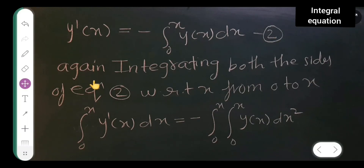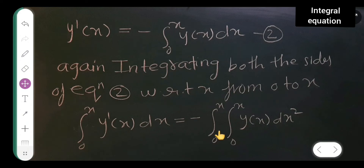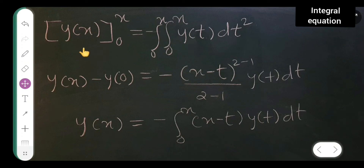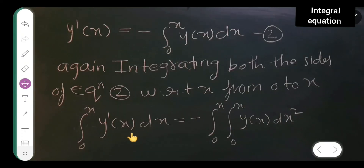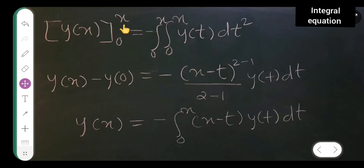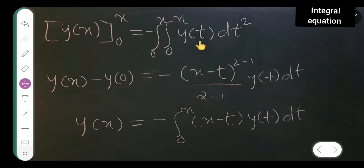Now integrate both sides of equation 2 again from 0 to x with respect to x. The left side gives the integral from 0 to x of y'(x) dx, which equals y(x) evaluated from 0 to x. On the right side, to avoid confusion with the outer variable, I replace the inner x with t, giving minus the integral from 0 to x of the integral from 0 to x of y(t) dt.